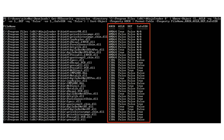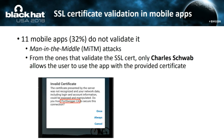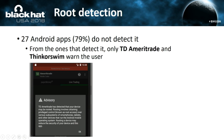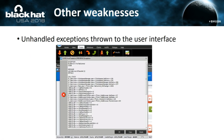Only 32% of mobile apps validate the SSL certificate. Only Charles Schwab warns you about an invalid certificate and allows you to continue. A similar thing happens with root detection — almost 80% of apps do not detect it, unlike banking apps which detect it and normally won't run on compromised environments. TD Ameritrade only warns you about the root environment but still allows you to trade in those environments.